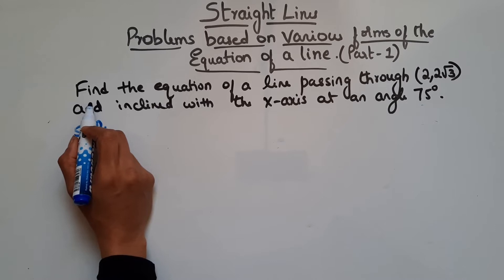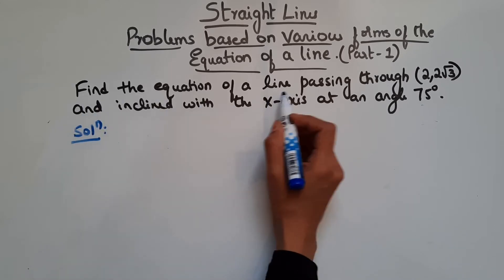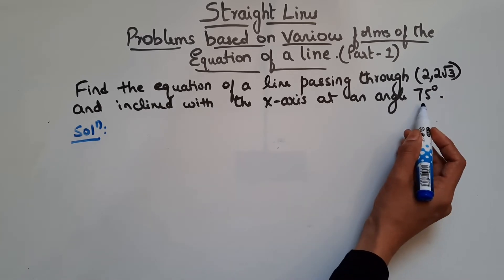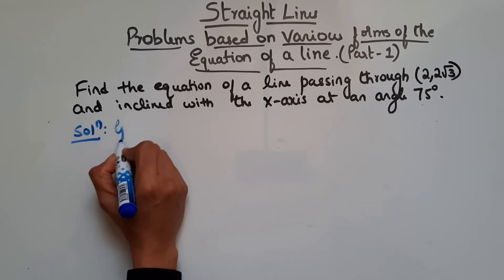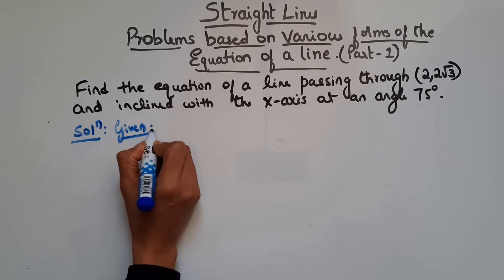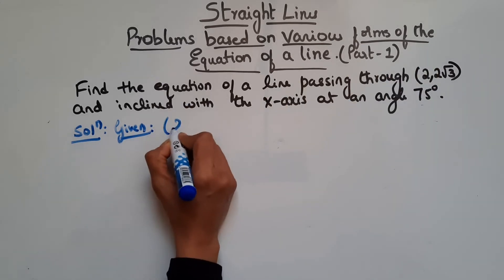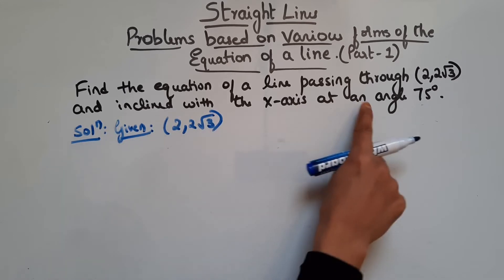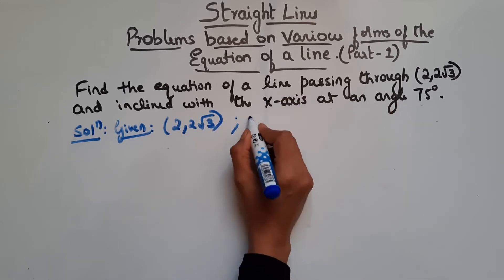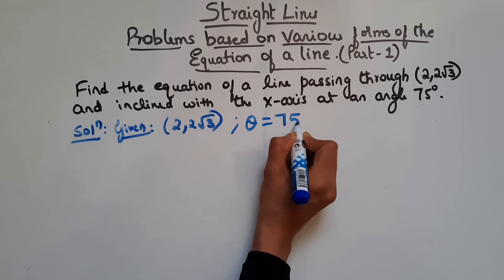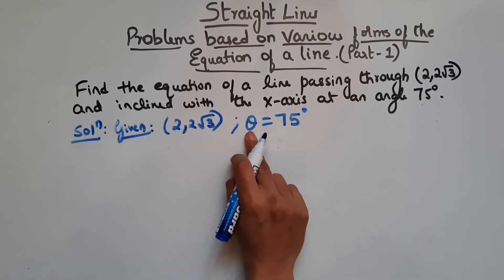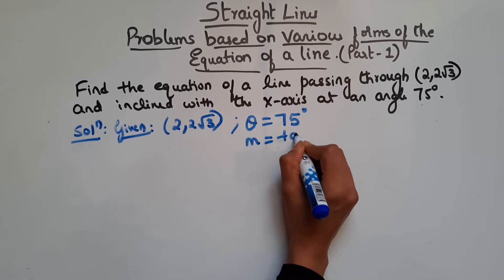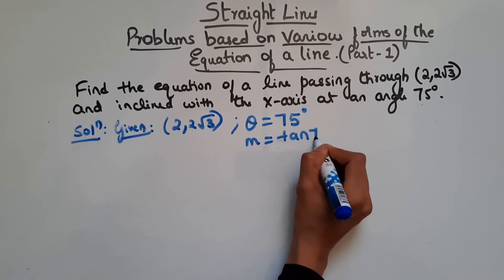So now let's see this problem. Here it says, find the equation of a line passing through (2, 2√3) and inclined with the x-axis at an angle of 75 degrees. So the point is (2, 2√3) and theta = 75 degrees. From theta we can find slope: m = tan(theta), so m = tan(75°).